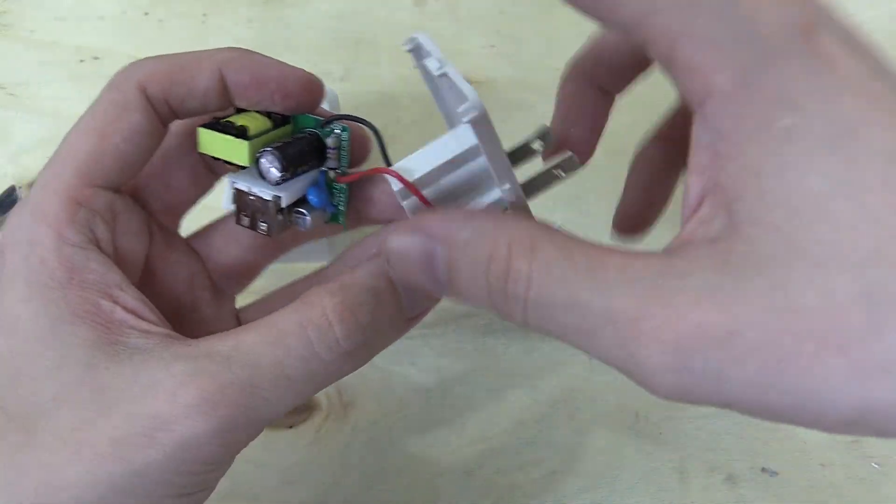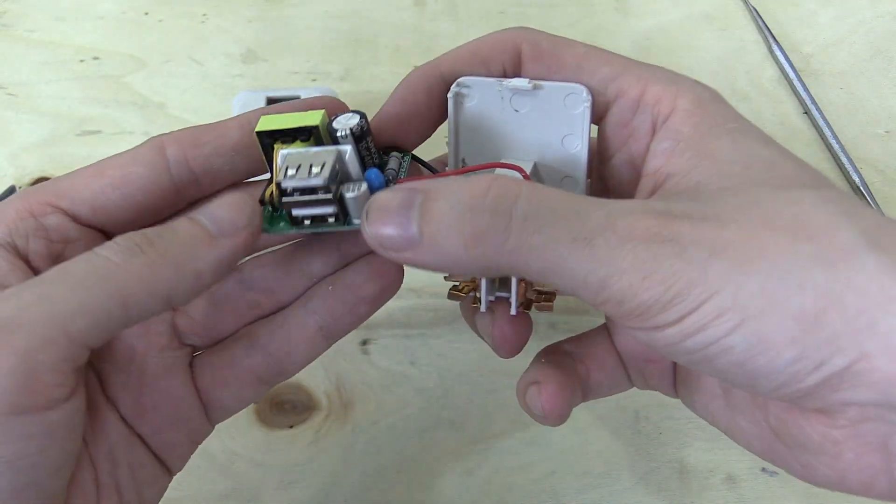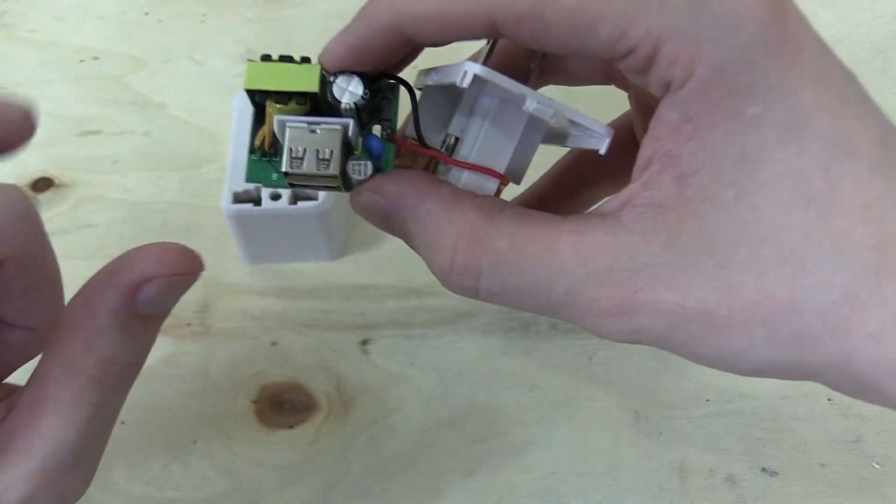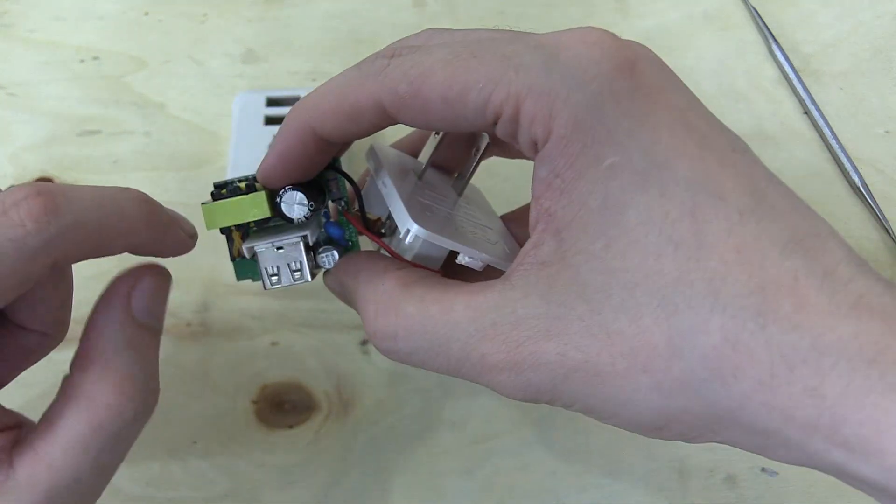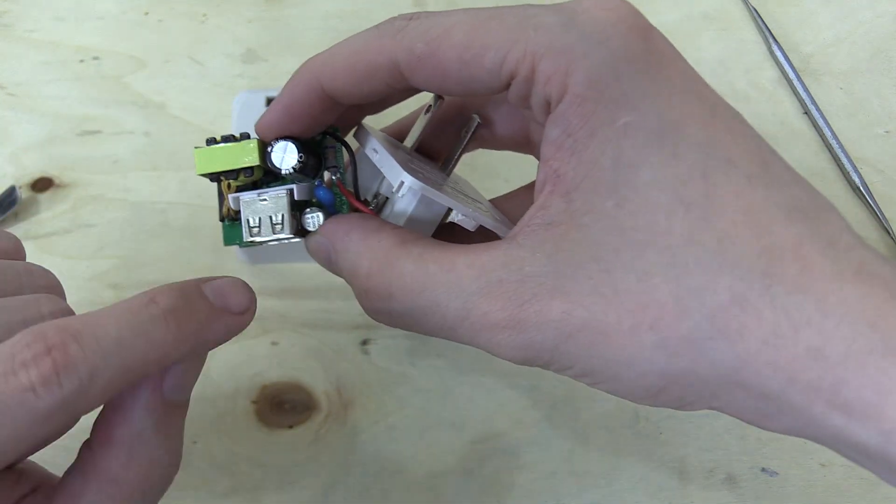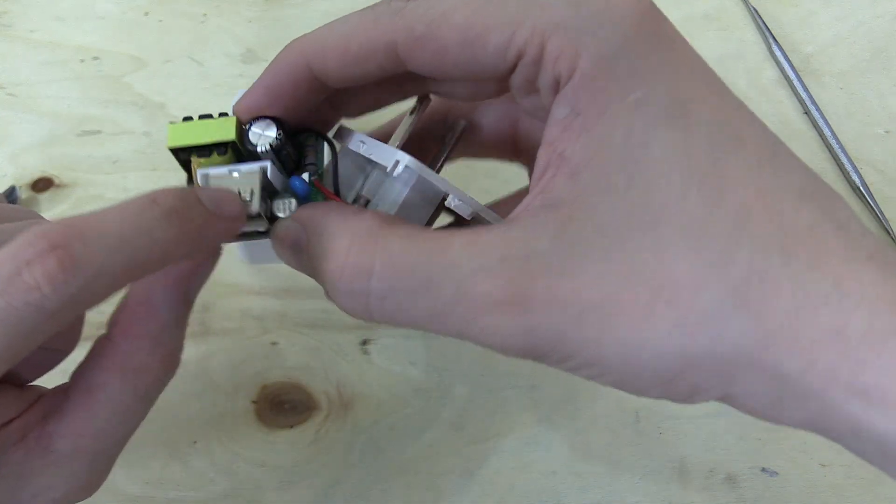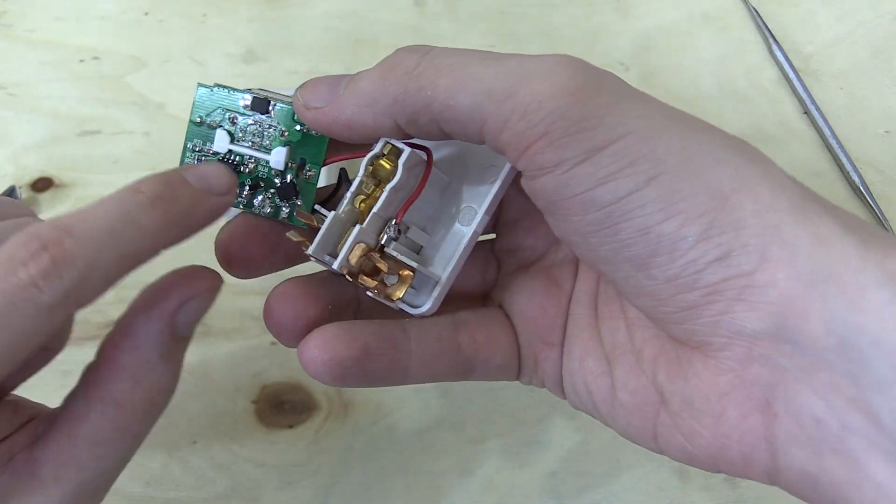We've got a direct connection from the AC pins going to our little USB board here. And something that's interesting is when you look at these PCBs, there will usually be a cutout section on the board. And that separates the high voltage AC from the low voltage DC. And this board has that cutout, but they've actually gone one step further.